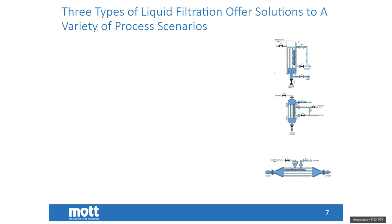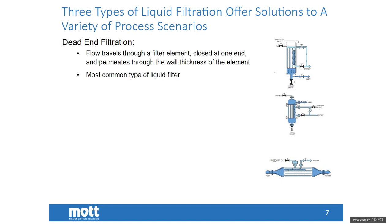I'm going to briefly introduce three types of liquid filtration and then focus on one. The first and most common is dead-end filtration — flow travels through a filter element, deposits solids on the surface, and permeates through the wall as clean filtrate. This is as simple as the string-wound filter in your basement if you have a home well. Next is low-velocity cross-flow, where elements are open on both ends and the outlet is connected back to the reactor as a recirculation loop — used with very dense solids or solids that form quickly impermeable cakes.